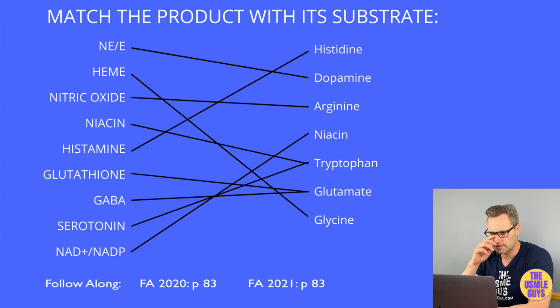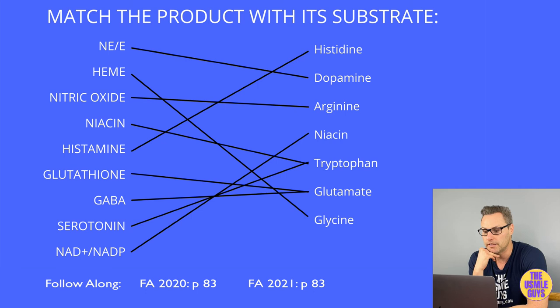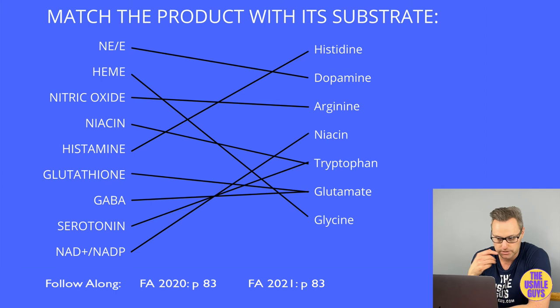Here are all the correct answers for the matching exercise. Make sure you know what creates what, because knowing these foundational pathways helps with more complex questions. For example, with PKU, you need to know that phenylalanine is the substrate through DOPA, dopamine, norepinephrine, and epinephrine — if you don't know that pathway, you'll miss an easy point. Please make sure you know these pathways.